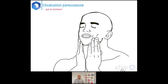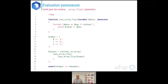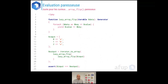L'évaluation paresseuse, c'est vraiment que du bonheur. Voici la version du lazy array_flip utilisée : contrairement à array_flip de PHP, le premier paramètre n'est plus un array mais un itérable, et le type de retour est un générateur. À l'intérieur, on itère sur cet itérable et on fait un yield de la value puis seulement de la key — ce qui permet de faire un lazy array_flip.